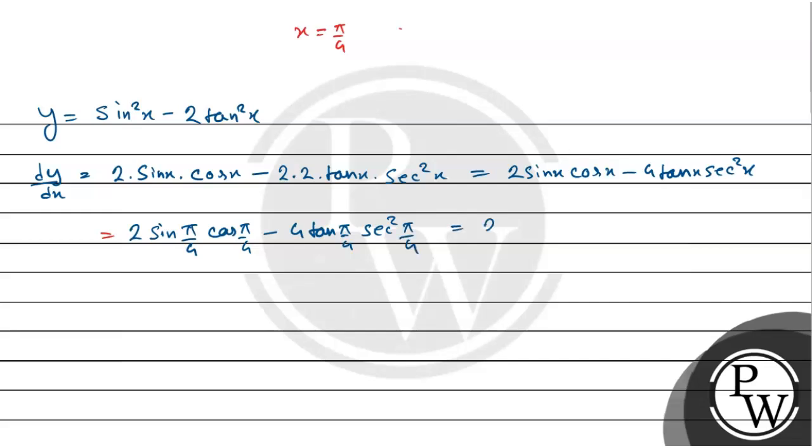Which is equals to, 2 into, so, sin π/4 value is 1 by root 2, that is, into, 1 by root 2, that is, the value of cos π/4, minus 4 into, tan π/4, that is, 1 into sec square π/4, that is, root 2 whole square.